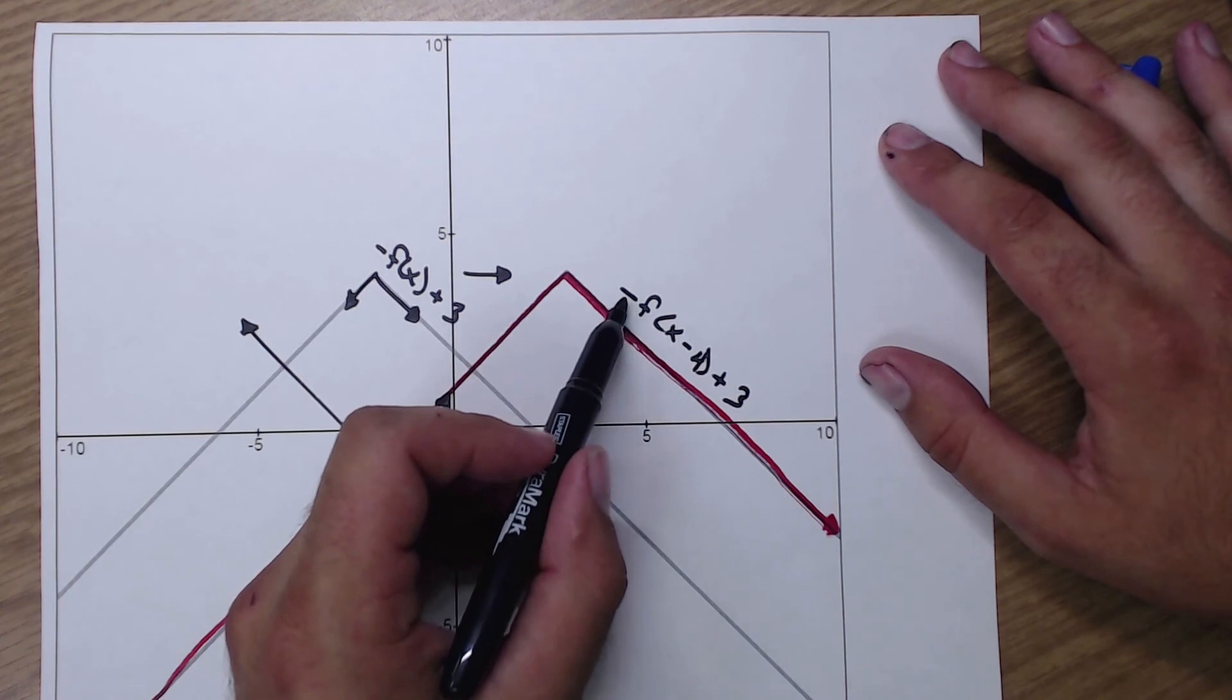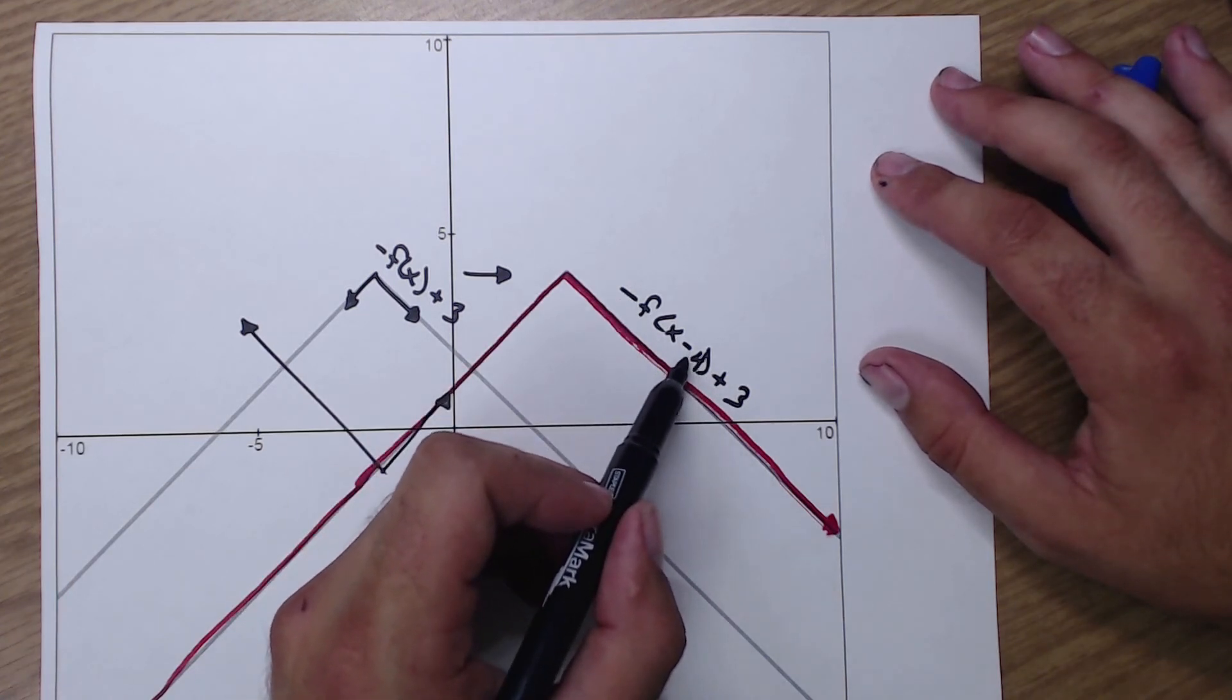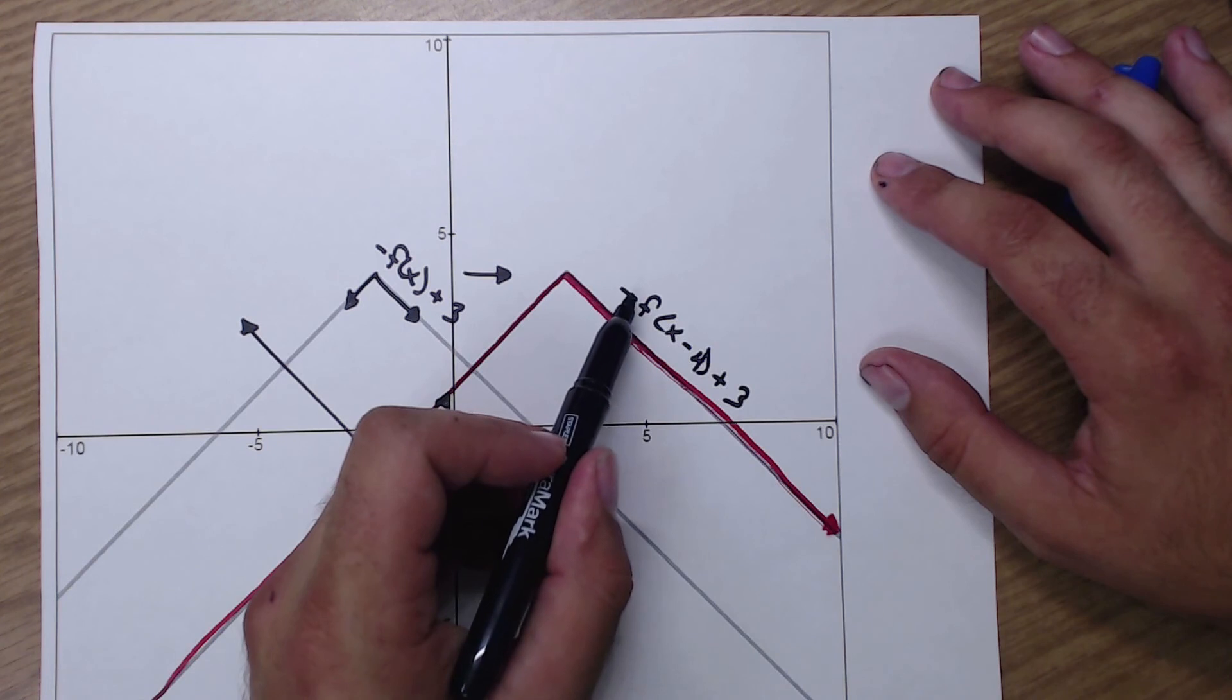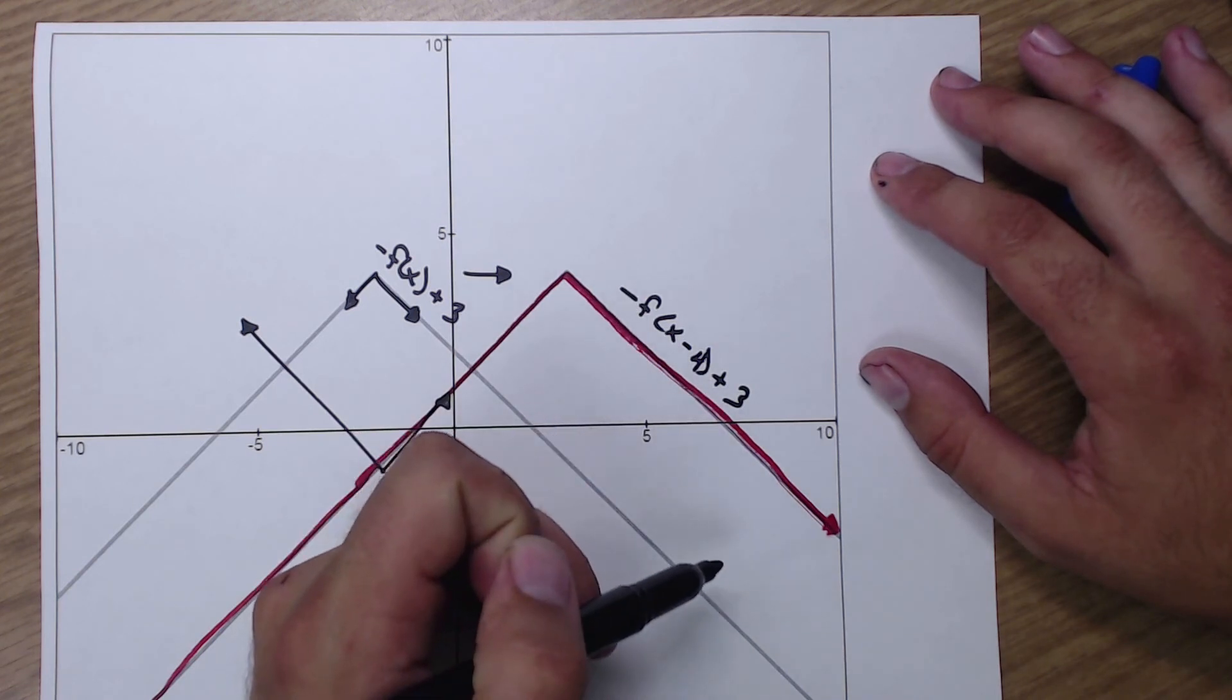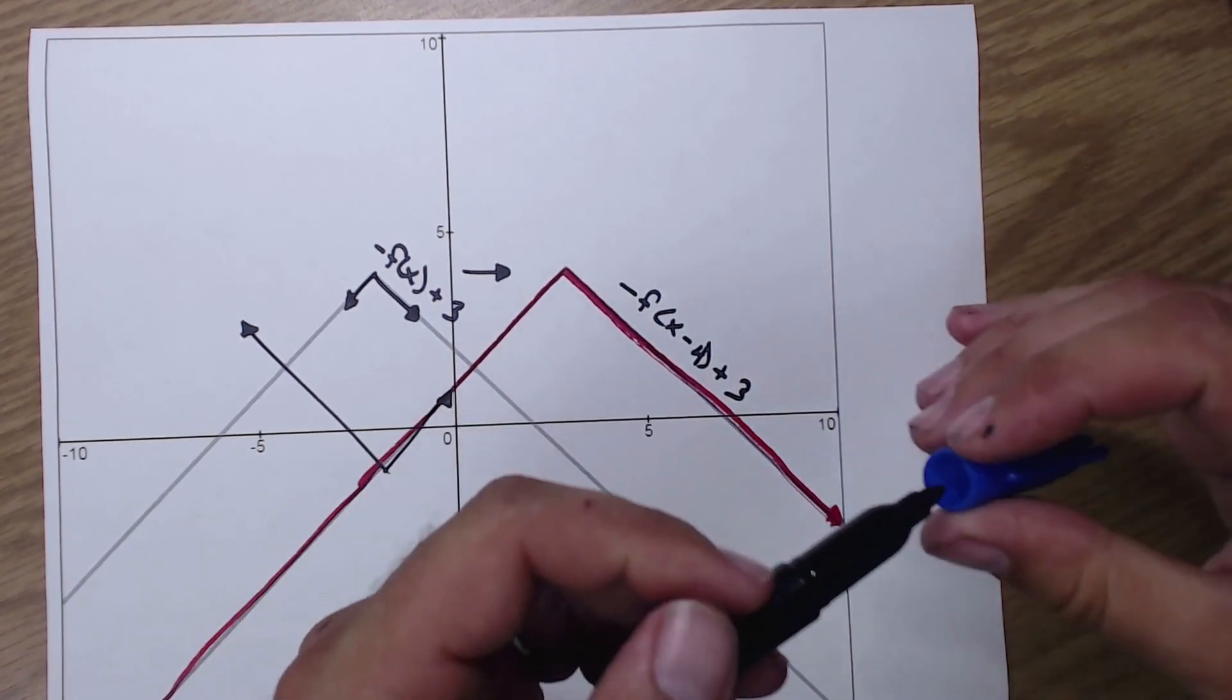So, the original function was down here like this. Reflected it. Shifted it up. Shifted it to the right. I reflected it. I shifted it up. And I shifted it to the right.